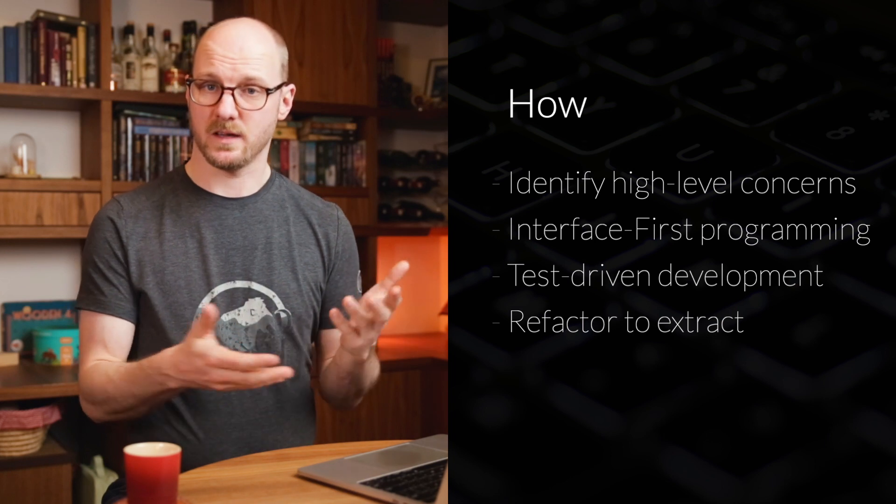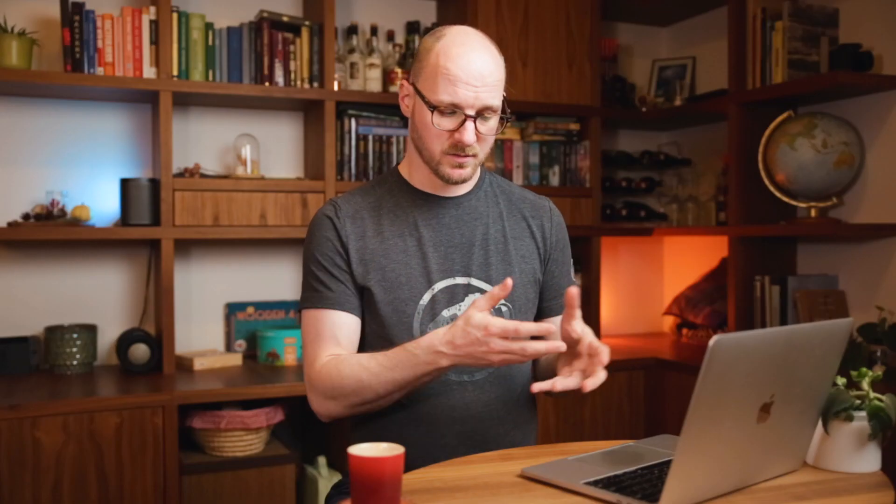My next tip is to refactor to extract. When you're dealing with existing code and you see a module has multiple concerns going on, you can take that code out, move it to a different file or module, and attempt to make it a separate concern. Then ask yourself: does this new module have higher cohesion? Does everything belong together logically? Is it truly a separate concern? And for the old module: are there now fewer things going on — just one thing left with high cohesion? Then you have clearly improved separation of concerns and increased the quality.